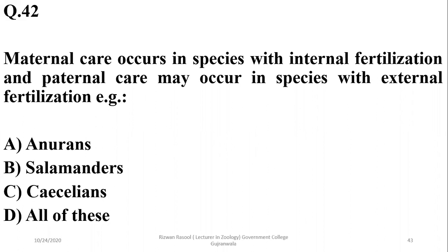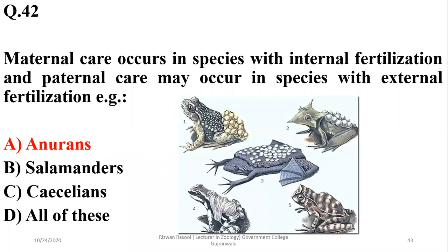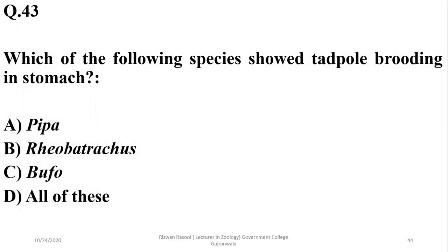Maternal care occurs in species with internal fertilization, and paternal care may occur in species with external fertilization. In anurans there is some parental care including both maternal and paternal care. Paternal care is usually seen in species with external fertilization, while in those with internal fertilization, maternal care is more common.